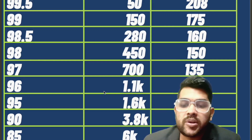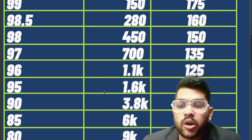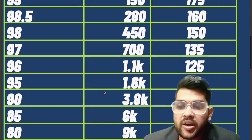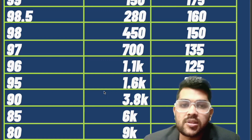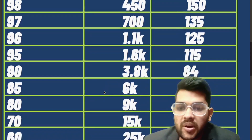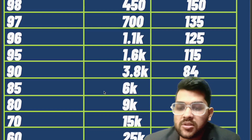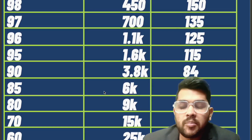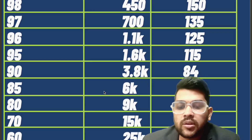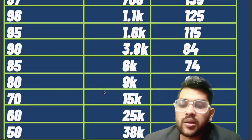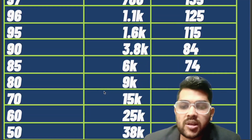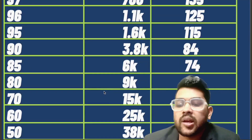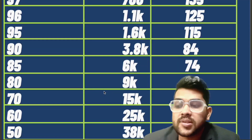For 90 percentile, 84 marks are required and rank will be 3,800. For 85 percentile, rank will be around 6,000 and marks required is 74. For 80 percentile, rank will be around 9,000 and marks is 60. For 70 percentile, 42 marks required and 15,000 rank. For 60 percentile, 25,000 rank and marks will be around 20.